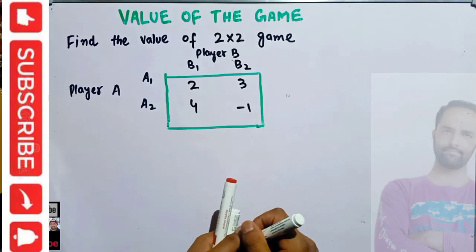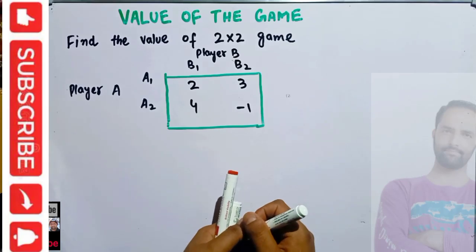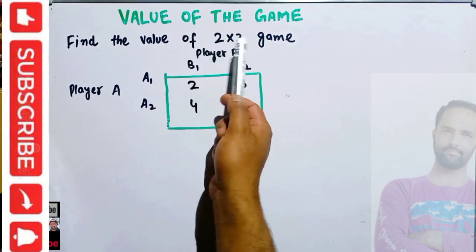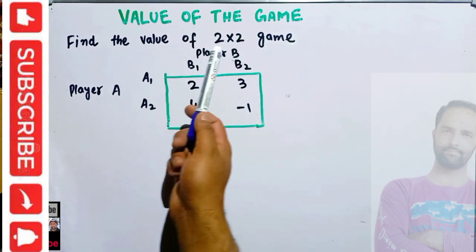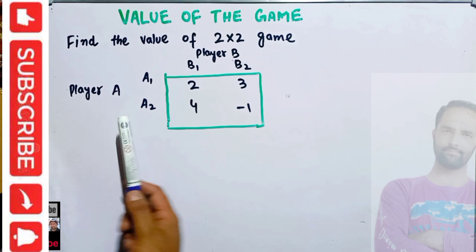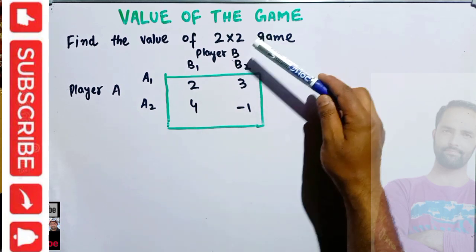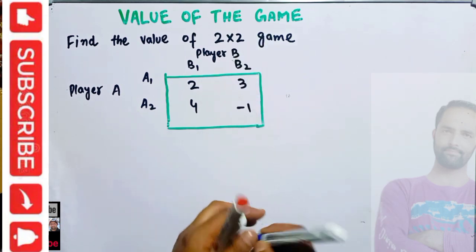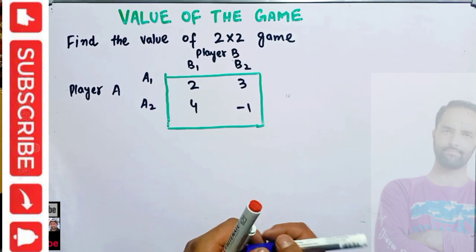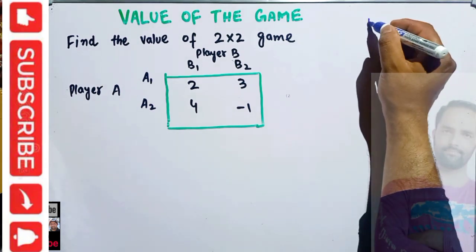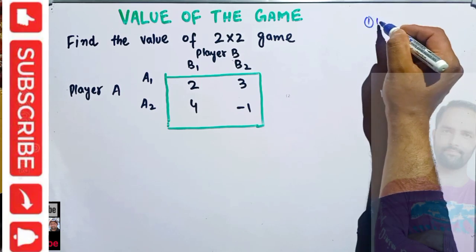In this video we will learn how to find the value of the game. The question is: find the value of this 2x2 game. We have Player A and Player B. Player A has strategies A1 and A2, and Player B has strategies B1 and B2. We need to find out the value of this game. Let us see it step by step.